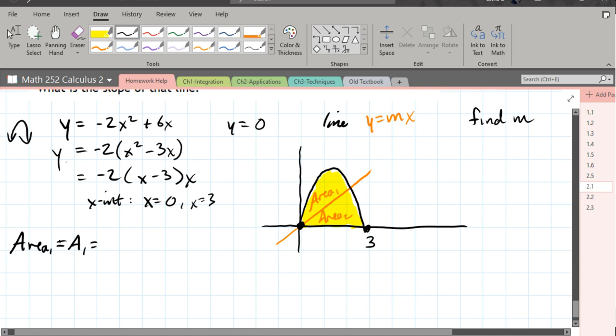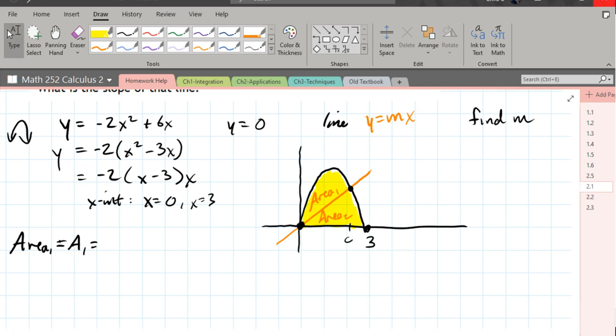So area one will be A1. We're about to have another problem because we also don't know that value right there, where it's going to intersect. That will be important for a few reasons. So let's come back to this in a minute.